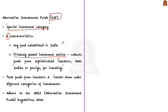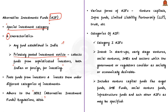An AIF pools funds from investors and invests them under different categories of investments as specified by SEBI for the benefit of the investors. This investment vehicle must adhere to the SEBI Alternative Investment Fund Regulations 2012. The various forms of AIF include venture capitalists, infra funds, limited liability partnerships, trusts, etc.